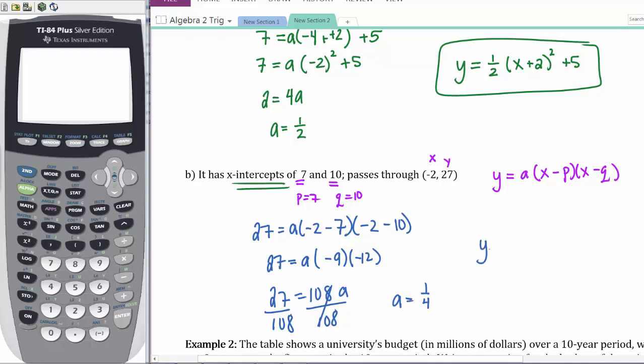So I have y = ¼(x - 7)(x - 10). Let's look at what this graph would look like. If I have 7,0 and 10,0, it passes through (-2, 27), so it's going to look something like this. It's positive, so you can always double check to make sure you have the right answer.